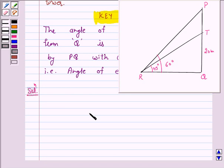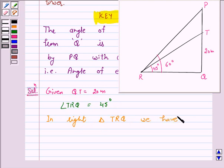So we have given QT is equal to 20 meters and angle TRQ is equal to 45 degrees. Now, in right angle TRQ we have, we want to find RQ. So we will use the trigonometric ratio which involves both TQ and RQ and that is tan 45 degrees.